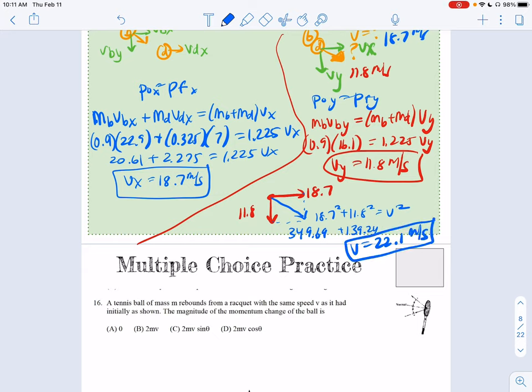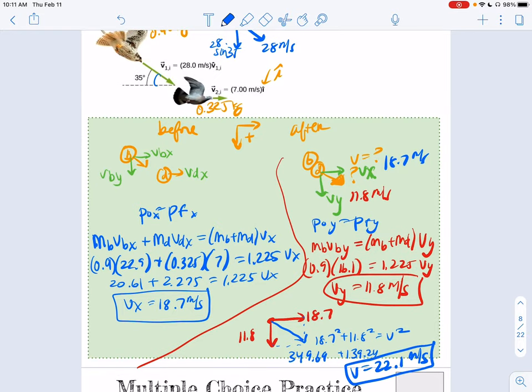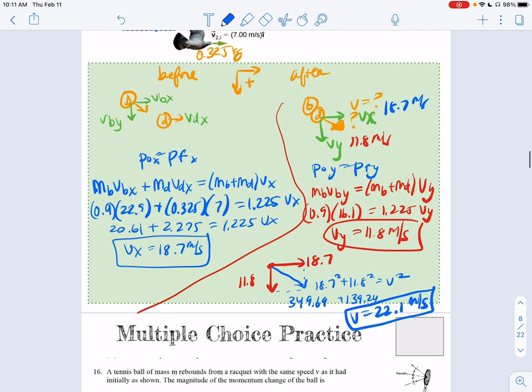Which makes sense, it's bigger than any of the other two legs, and it's less than the first guy came in, which would make sense. And then if you also want the angle, if they ask for that angle, you could do like tangent theta is 11.8 over 18.7, and then you could solve for that angle. They didn't ask for that, but if they did, you could just solve that angle.